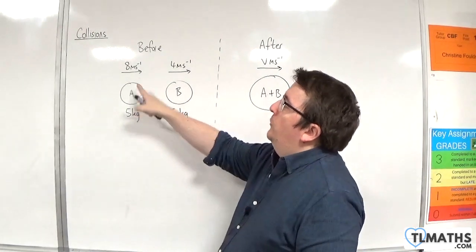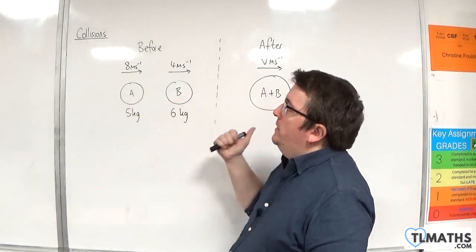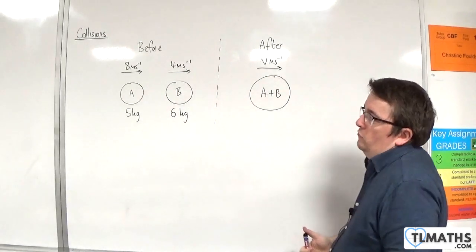A is travelling with a speed of 8 metres per second to the right, and B is travelling with a speed of 4 metres per second to the right.